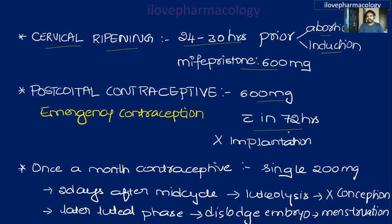Mifepristone can be used as a post-coital emergency contraceptive: 600 mg should be used within 72 hours of intercourse, which interferes with implantation. It can also be used as a once-a-month contraceptive, where a single 200 mg dose is given two days after mid-cycle surge, leading to luteolysis and interfering with conception.